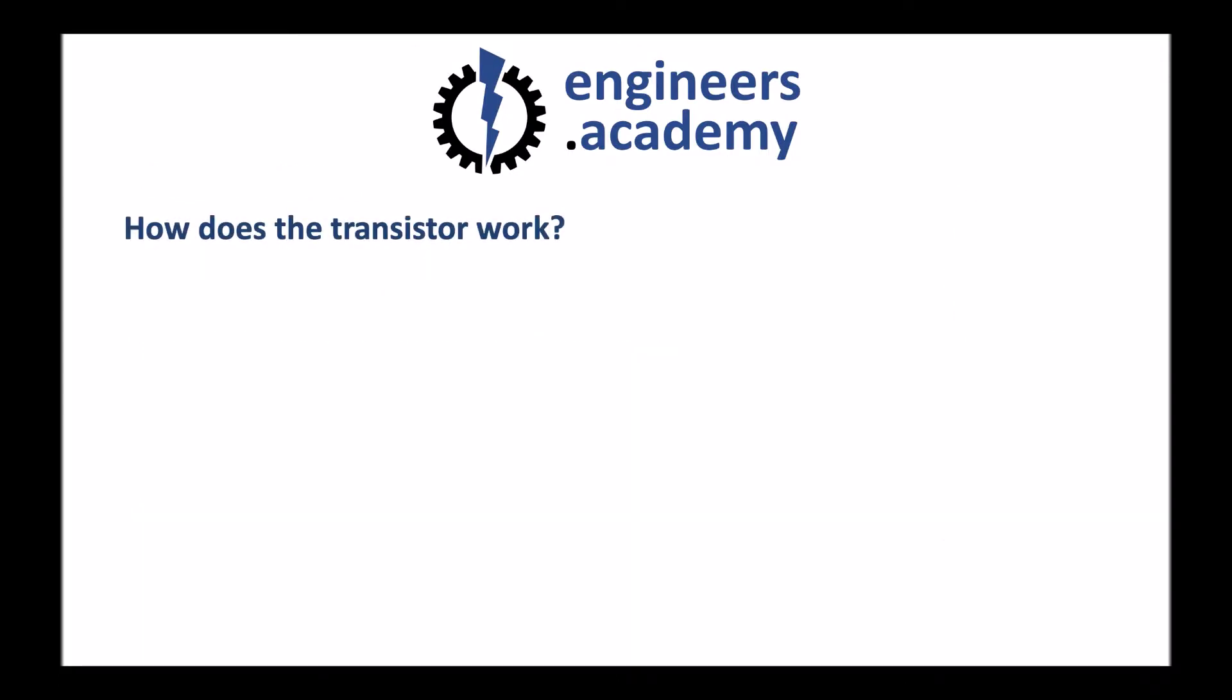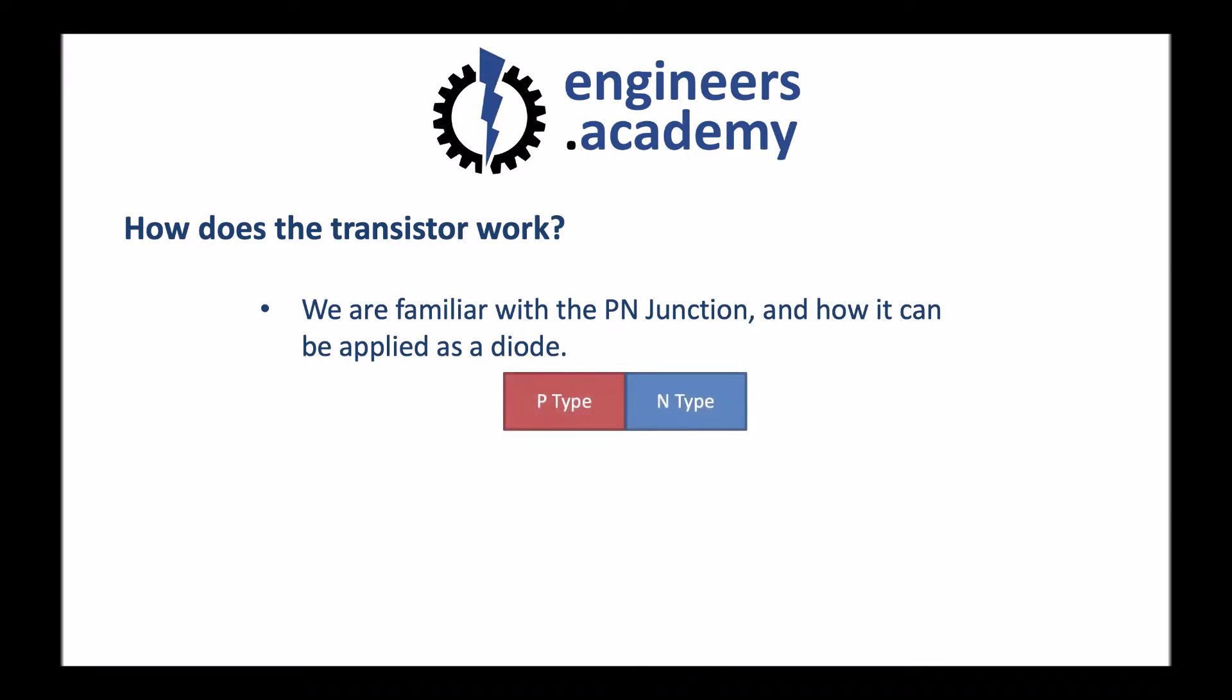How does the transistor work? To understand this, we're going to refer back to some of the topics looked at in the previous video, namely doping of semiconductors and the formation of PN junctions. We're familiar with the PN junction and how it was applied as a diode in the previous video, but a small modification leads to the structure of a bipolar junction transistor.